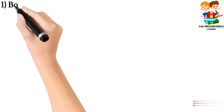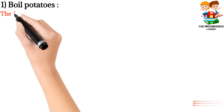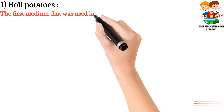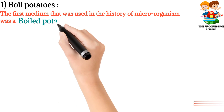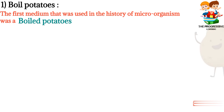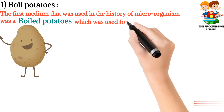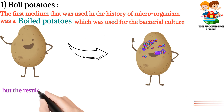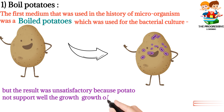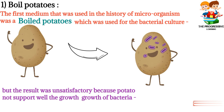Let's get started. The very first is wild potato. The first medium that was used in the history of microbiology was a wild potato, which is used for bacterial culture. But the result was unsatisfactory because potato does not support the growth of bacteria well.